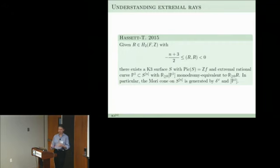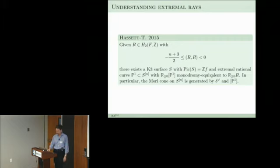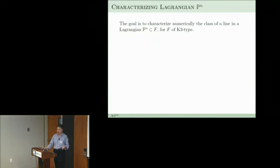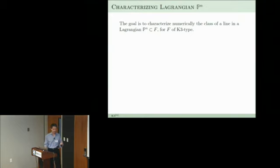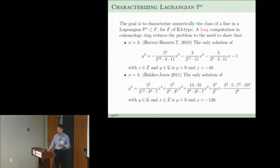This lemma reduces the study of extremal classes on arbitrary holomorphic symplectic varieties to K3 surfaces and Hilb^n with Picard rank 2. The Mori cone is generated by delta-check and this particular class. For example, to understand the most extremal ones — the minus (n+3)/2 classes — geometrically you would look at Lagrangian P^n subvarieties and at classes of lines in those Lagrangian P^n's.